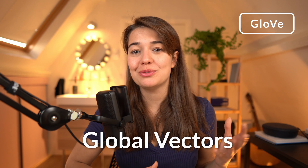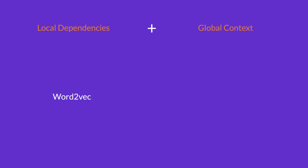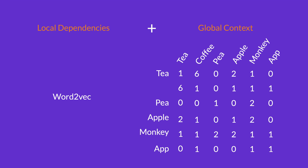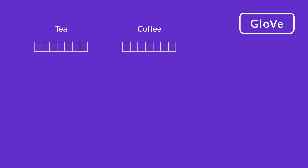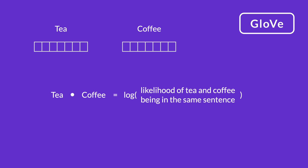Next, we have GloVe. GloVe stands for Global Vectors, and it is an extension of Word2Vec. It is an extension because it not only looks at the local dependencies of words, but it also looks at the global context of the whole sentence. It does that by taking into consideration the co-occurrence metrics of the sentence. The training objective of GloVe is to learn word vectors such that their dot product equals the logarithm of the words' probability of co-occurrence.